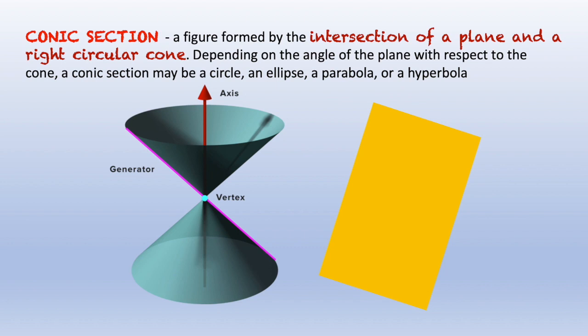Now, let's see how these two figures generate a conic section when they intersect.